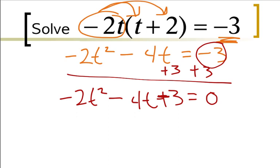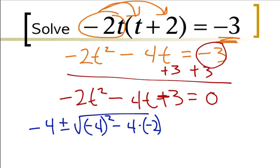Now that I've got everything on the left hand side in standard form, I can plug it into the quadratic formula. I've got negative negative 4 plus or minus the square root of negative 4 squared minus 4 times a which is negative 2 times c which is 3, all over 2 times my a which is negative 2.